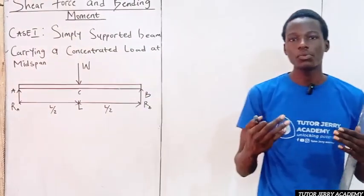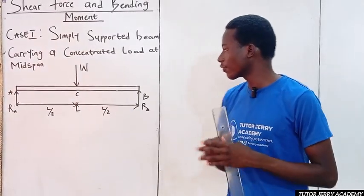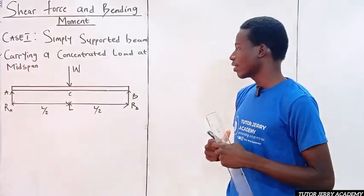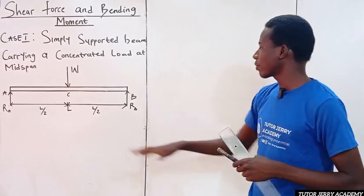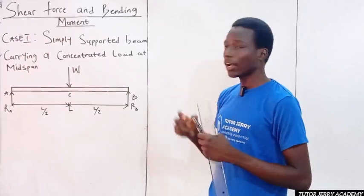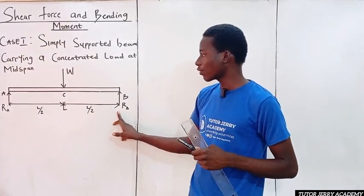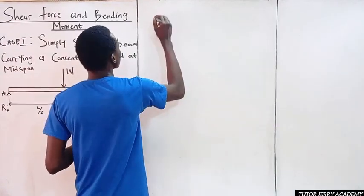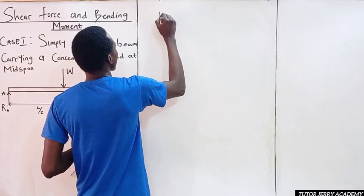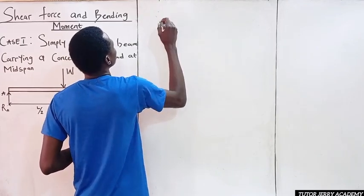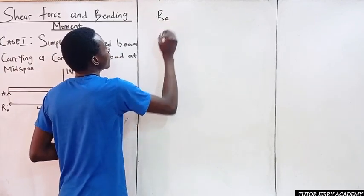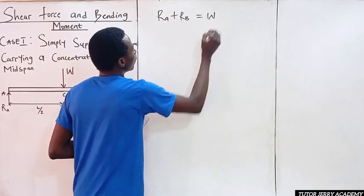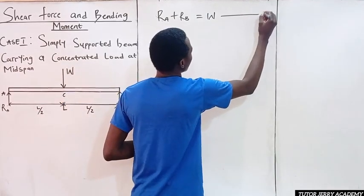In order to proceed, the first thing we are going to do is consider the forces on this beam. We know that the sum of upward forces is equal to the sum of downward forces. Considering this beam, we have two upward forces and one downward force. RA is an upward force and RB is an upward force, so RA plus RB equals W. Let this be equation one.